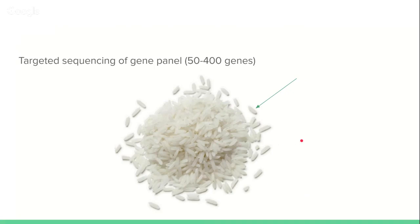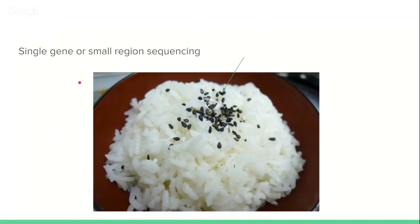Finally, if you only want to sequence a single gene or a very small region of the human genome, that would compare to a sesame seed — much smaller in volume than a grain of rice for targeted gene panel sequencing, much smaller than a grape for whole exome sequencing, and much smaller than an orange for whole genome sequencing at 30x.